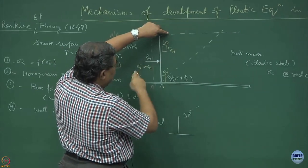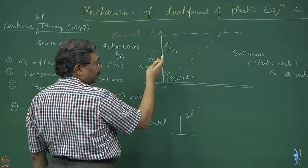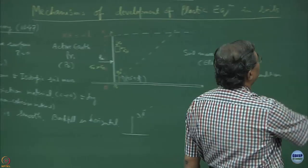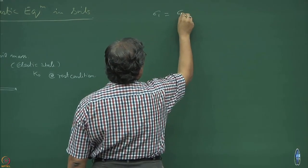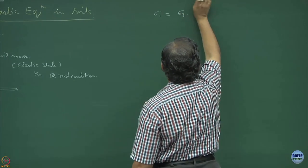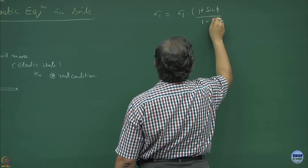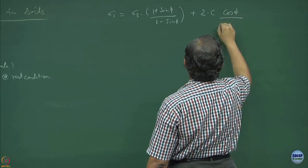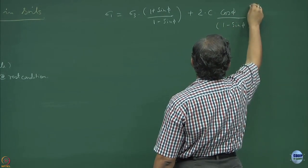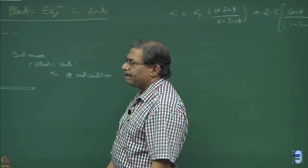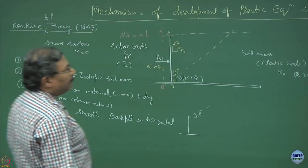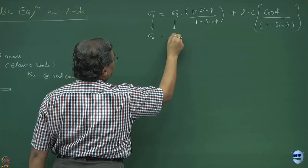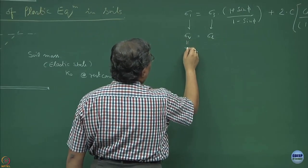When this type of state of stress develops where sigma v is greater than sigma h, and the change in sigma v remains zero, I hope you can realize that the equation we derived was: sigma 1 equals sigma 3 times (1 + sin phi) over (1 − sin phi). In this case, sigma 1 happens to be sigma v, sigma 3 happens to be sigma h, and sigma v equals gamma times z.